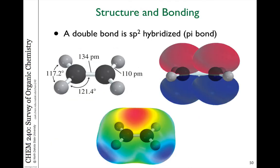Here is another representation showing the side-to-side overlap of p orbitals, along with an electrostatic potential map. On this map, red indicates regions of negative charge and blue indicates positive charge. You can see there's a lot of negative charge on the pi bond of the double bond — and that's where reactivity often happens. So the types of orbital overlaps relate to where electron density is and where we can predict future reactivity.